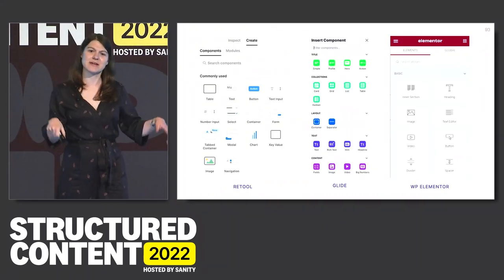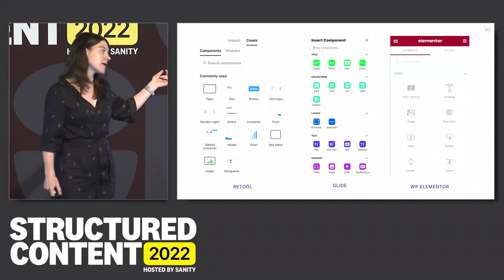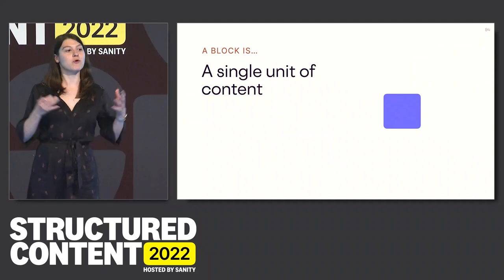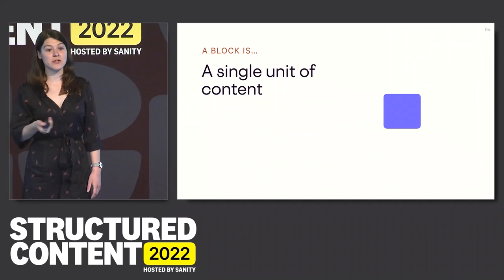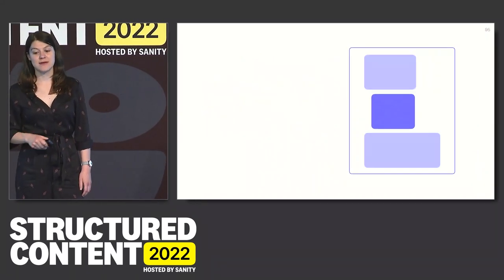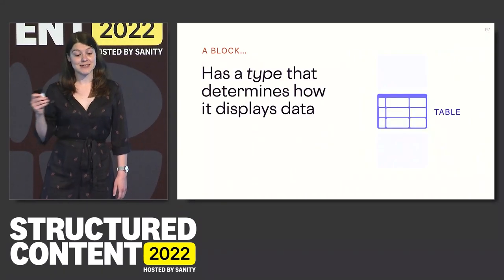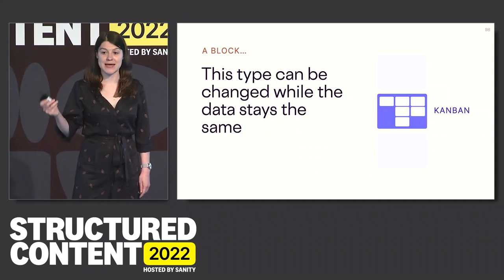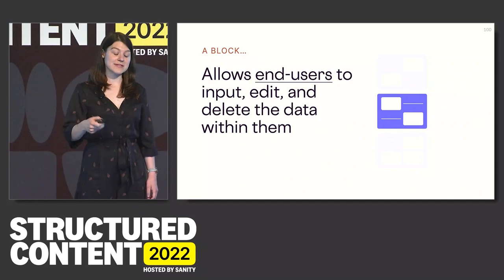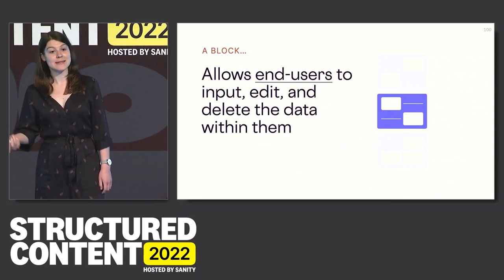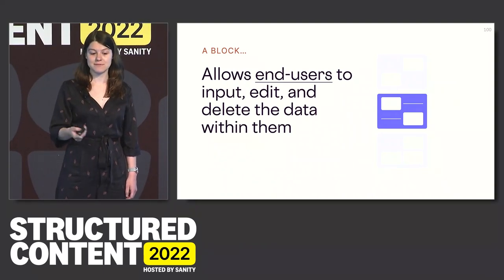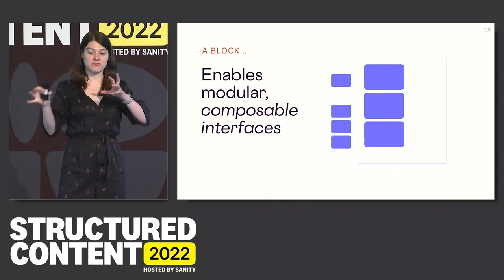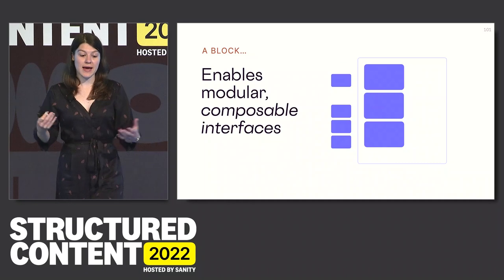Some of these apps put blocks in a sidebar or pop-out menu — like Retool, Glide, and WP Elementor, where they give you a whole list to pick from. I like to define a block as a single unit of content within a document or canvas that can be flexibly composed and rearranged, that has a type which determines how it displays data. A table has rows and columns. You could change that type while the data stays the same — take data from a table and turn it into a Kanban or image gallery. And crucially, end users — not developers — can input, edit, and delete that data. Users are in control of the data rather than the devs.